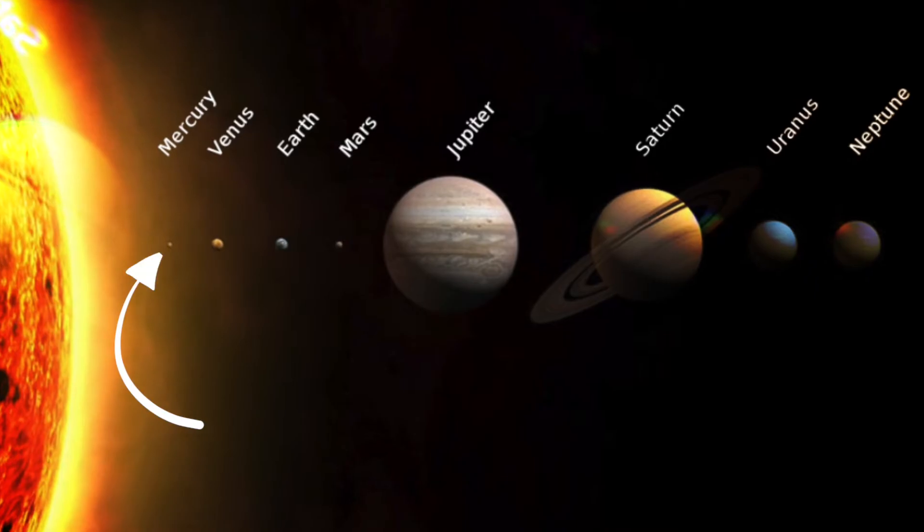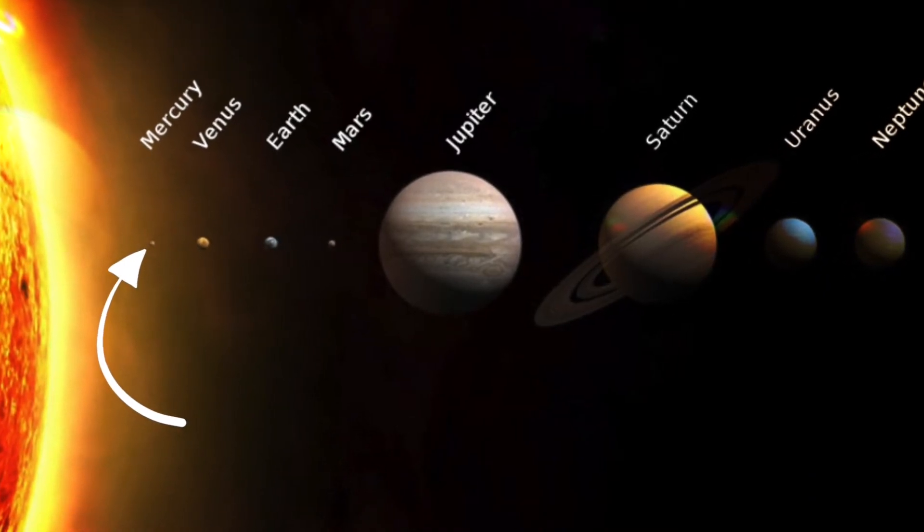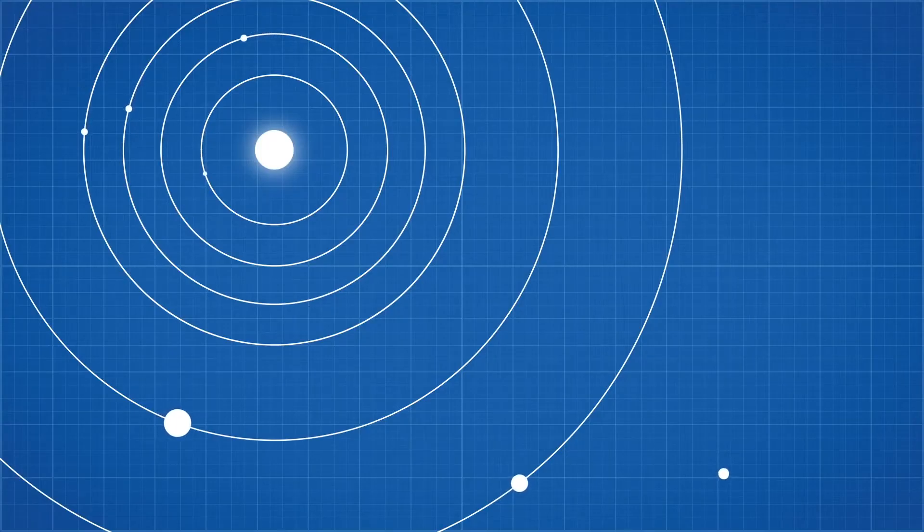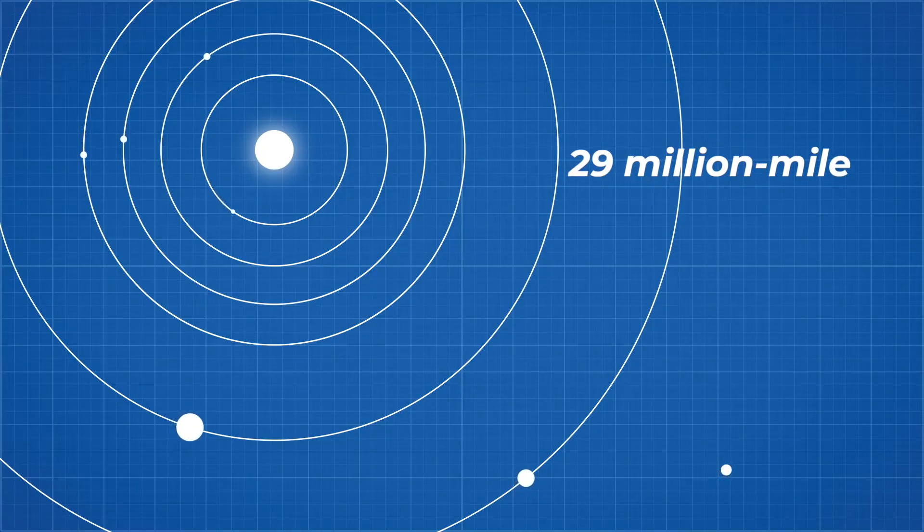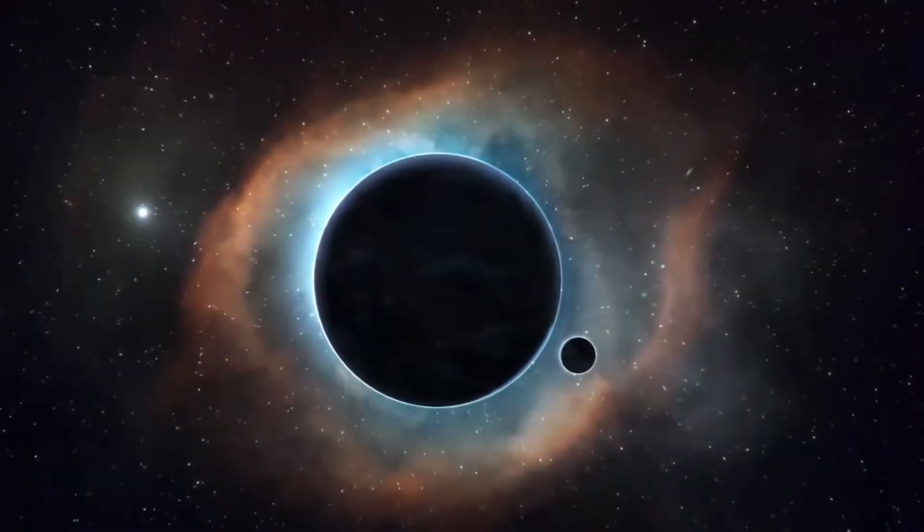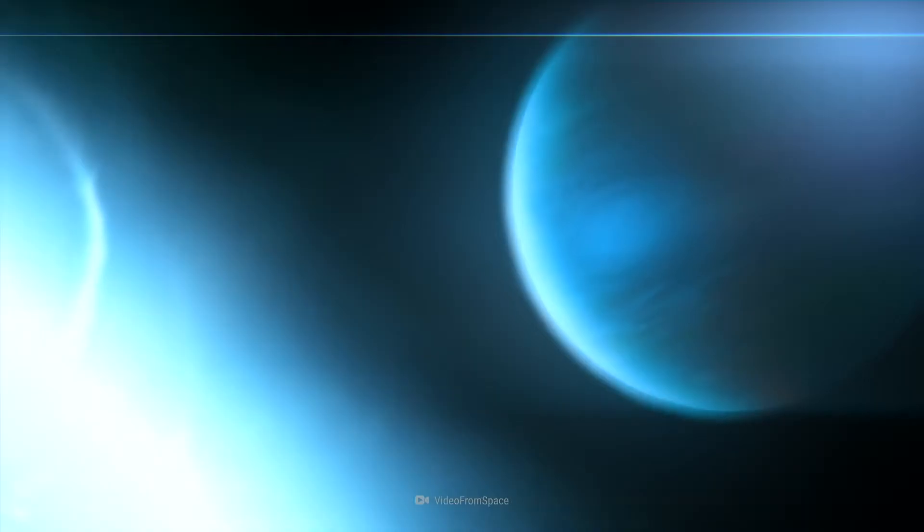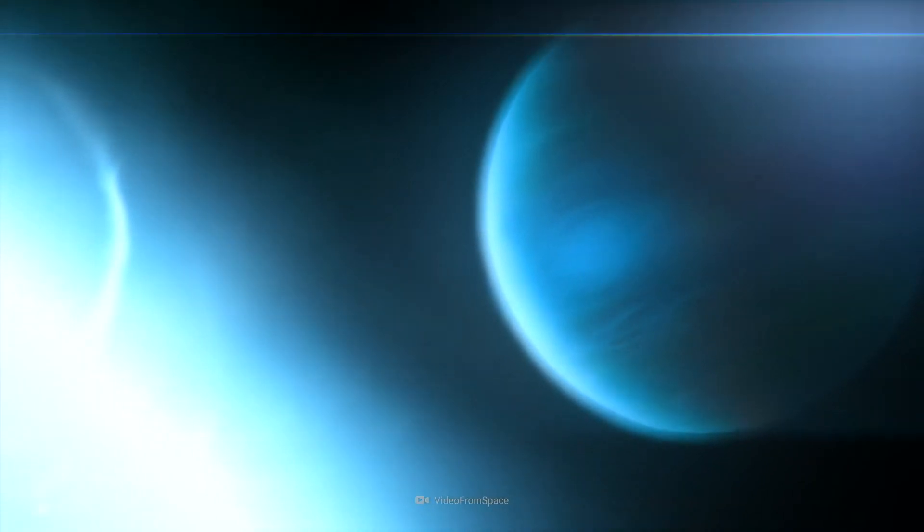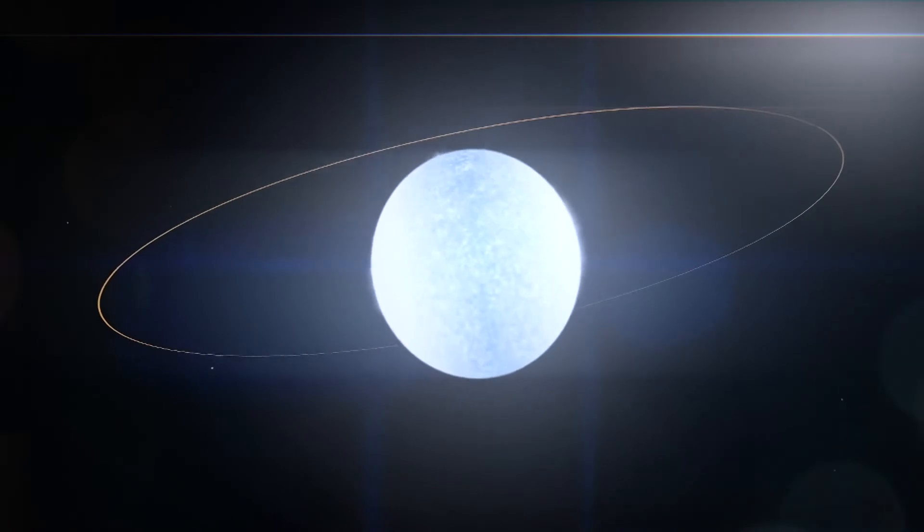On the other hand, the closest planet to the Sun in our solar system is Mercury, circling the Sun once every 88 days in its 29 million mile-wide orbit. Kelt 9b, despite being larger than Jupiter, orbits its star far closer than Mercury, 11 times closer. The planet's orbit has a radius of only 3 million miles.